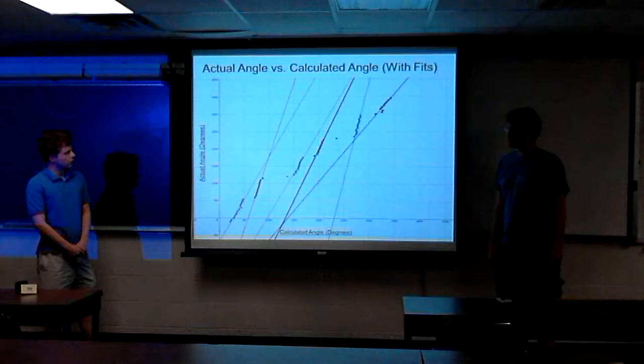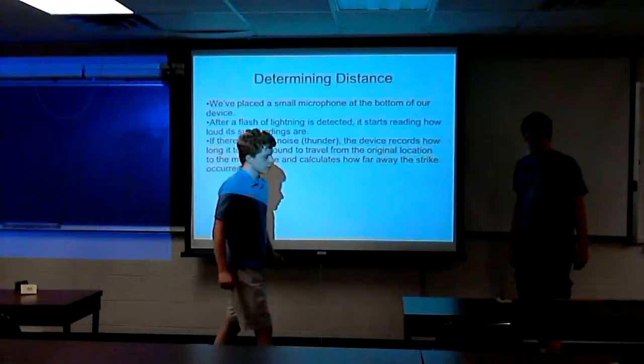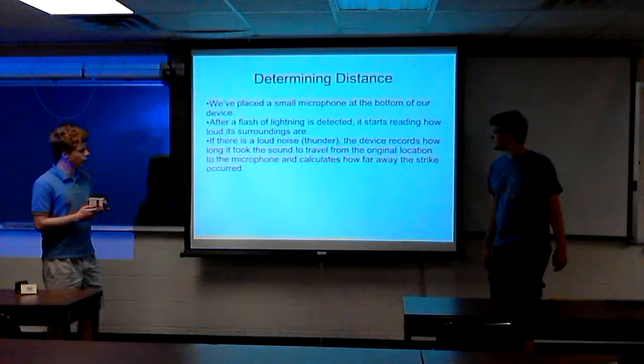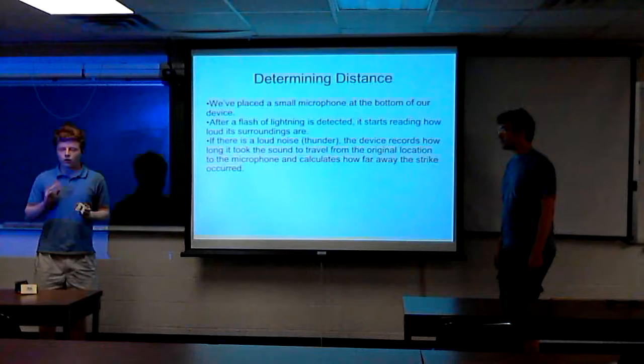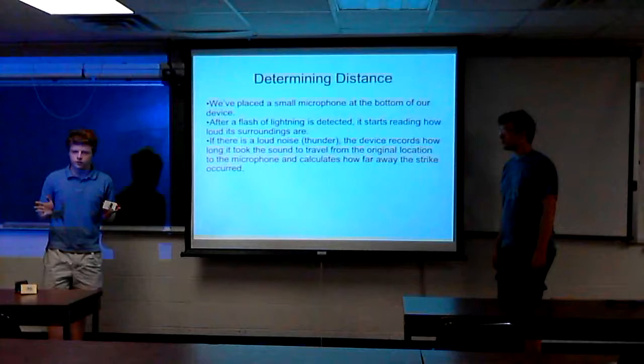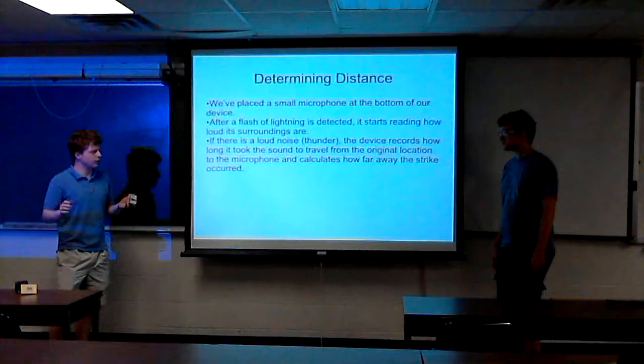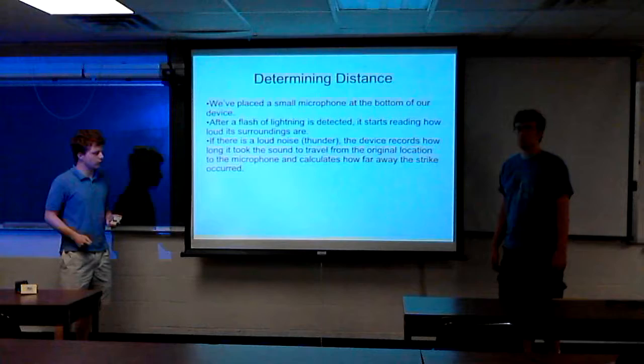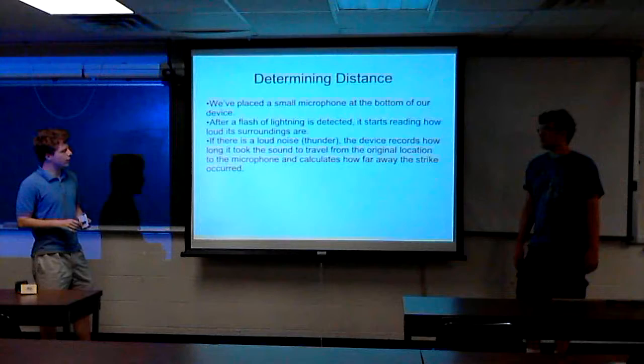So determining distance, we used a sound detection device that we ordered a few weeks ago. So we use this microphone and the way it works is we want to turn this on after all the flashes of lightning have occurred. So we set a timer in our program and once, I believe one second has passed before another successive flash of lightning, then we start, we turn on the microphone and it starts listening to its surroundings. If there's a sudden peak in, if there's a sudden loud noise, which we hope is thunder, then it will plug it into a little equation which uses the difference between the speed of sound and the speed of light and calculates approximately how far away it is.